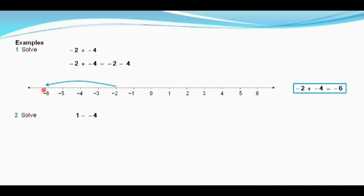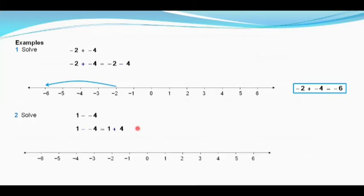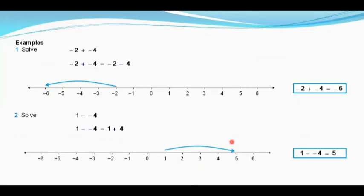One more question: 1 minus minus 4. We keep only one sign in between — minus of minus is plus — so we get 1 plus 4. On the number line, from 1 we move four places towards the right, and we reach 5. So 1 minus minus 4 gives us 5.